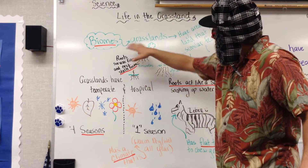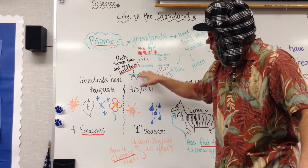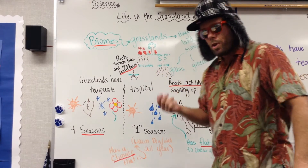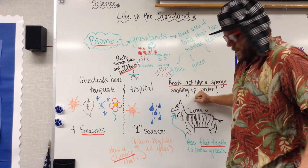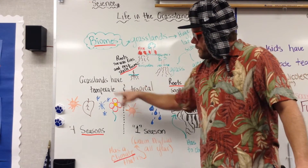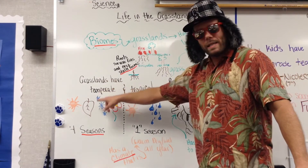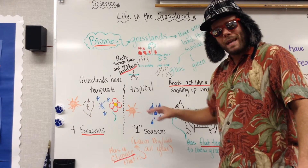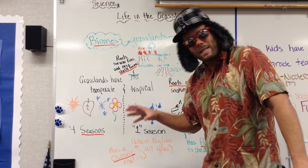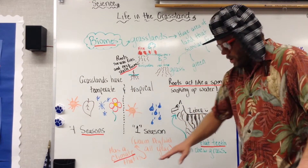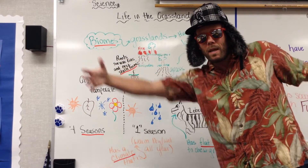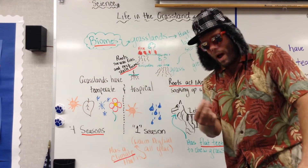So we talked about what a biome is, the importance of roots during a fire and when there's not a lot of rain, how grasslands can be temperate and tropical depending on where they are in the world, and the difference between climate and weather.